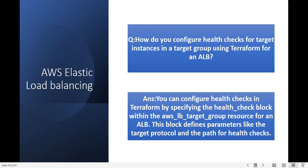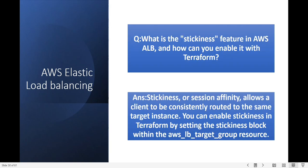What is the stickiness feature in AWS ELB and how can you enable it with Terraform? Stickiness, or session affinity, allows a client to be consistently routed to the same target instance. You can enable stickiness in Terraform by setting the stickiness block within the aws_lb_target_group resource.